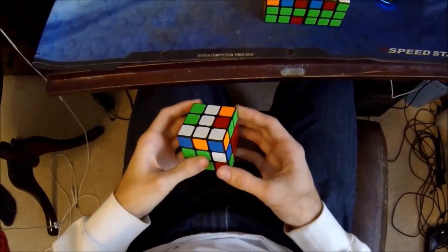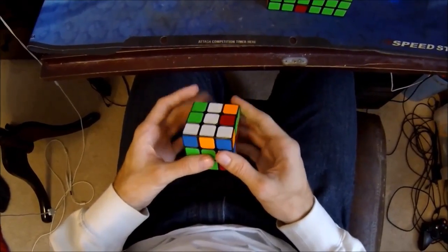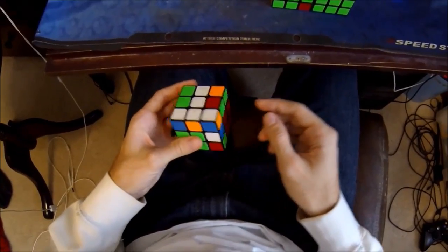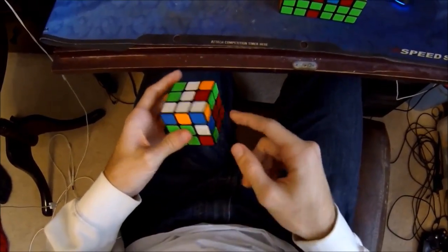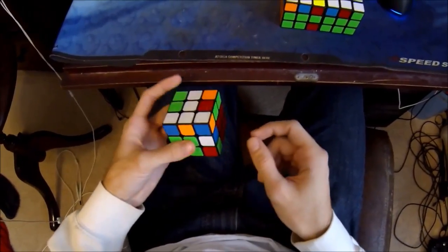The first method I'm going to go over is called MGLS. It was developed by Shitaro Makasumi and Lucas Garon. And this method is a two-phase method for producing an OLL skip with the Fridrich method.